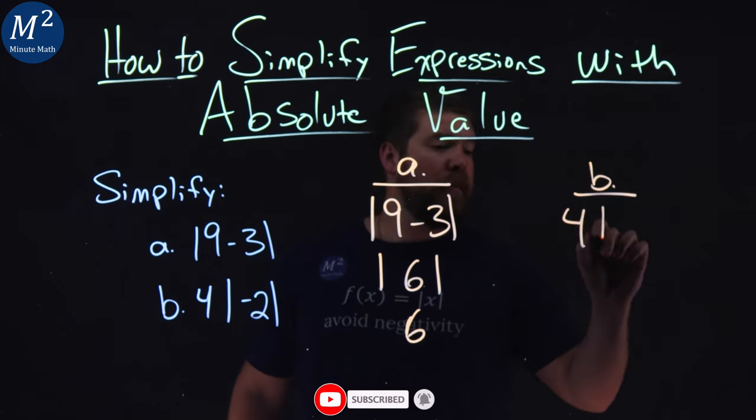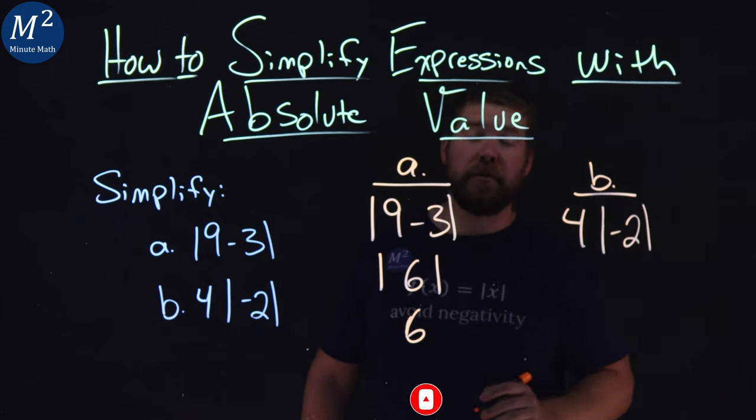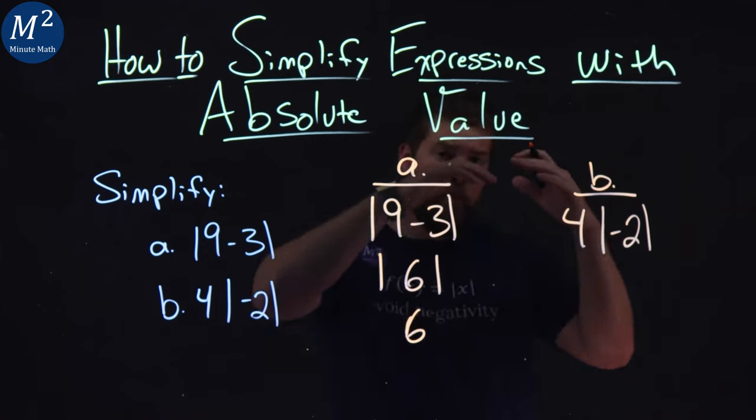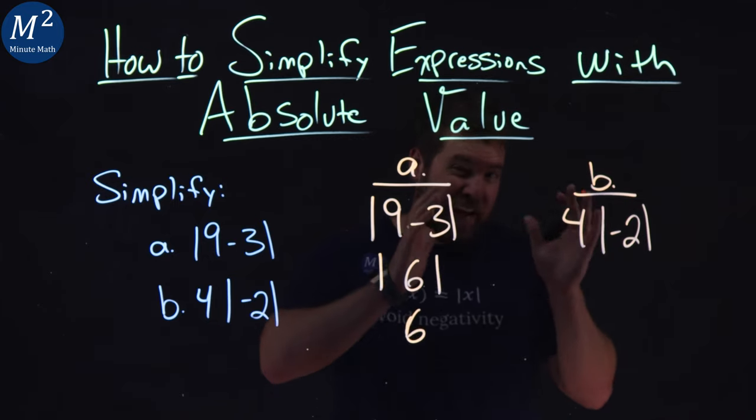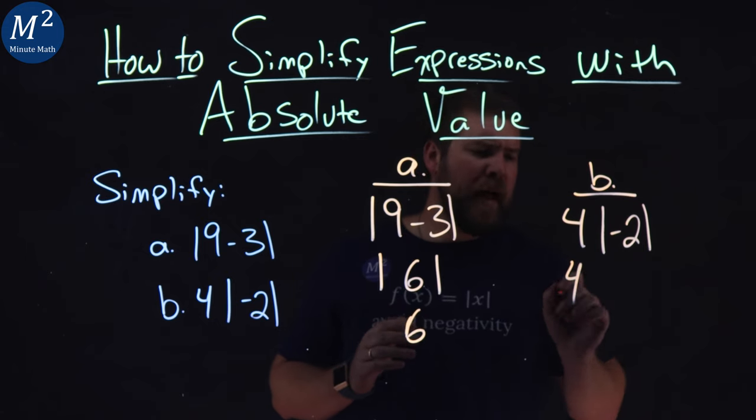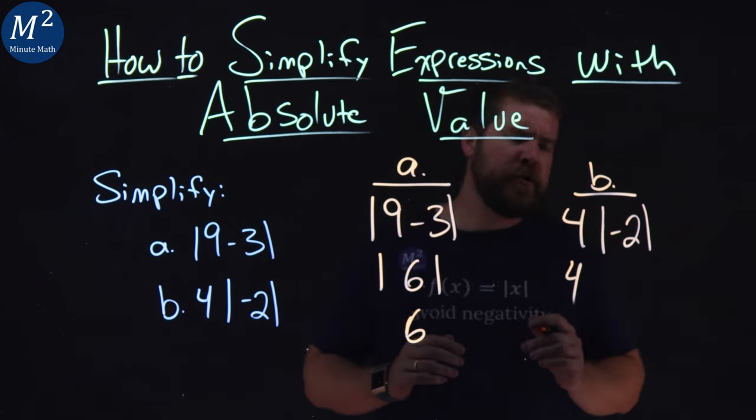We have 4 times the absolute value of negative 2. Well, our rules state within the parentheses or absolute value, that's what we have to simplify first. So 4 stays on the opposite side.